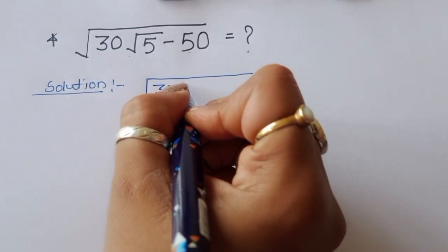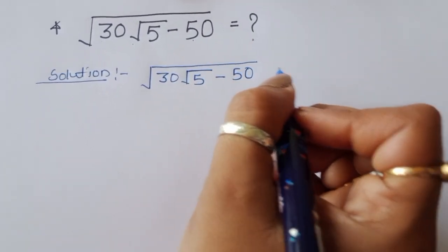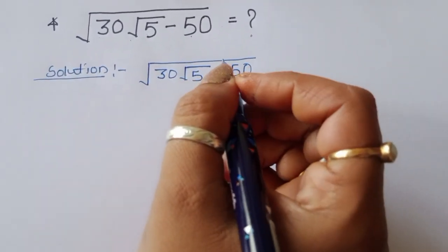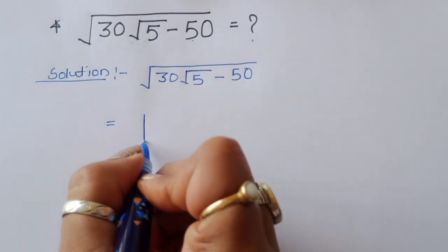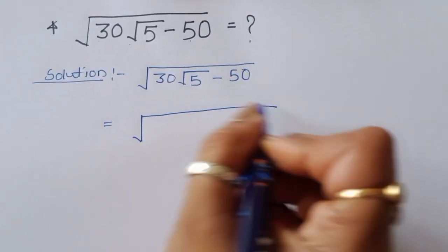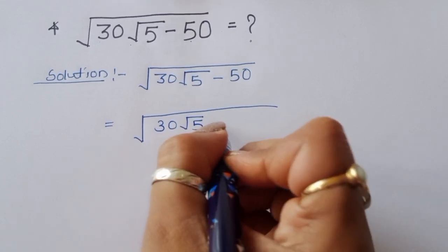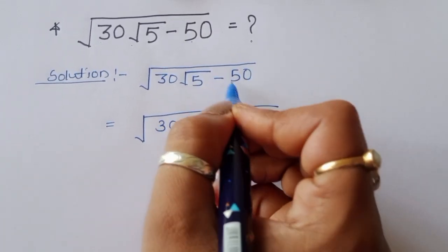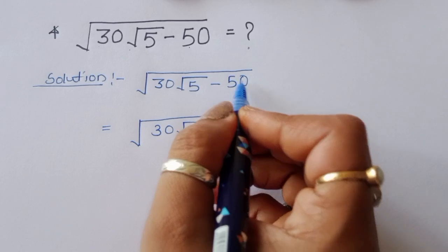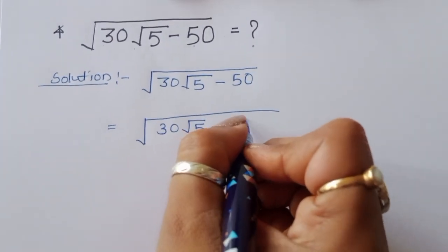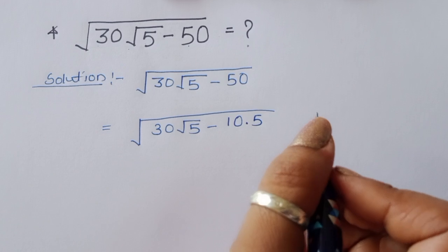The question is square root of 30 under square root of 5 minus 50. We can rewrite this as square root of 30 times square root of 5 minus 50, and we can convert 50 into 10 times 5, since 10 times 5 is 50.